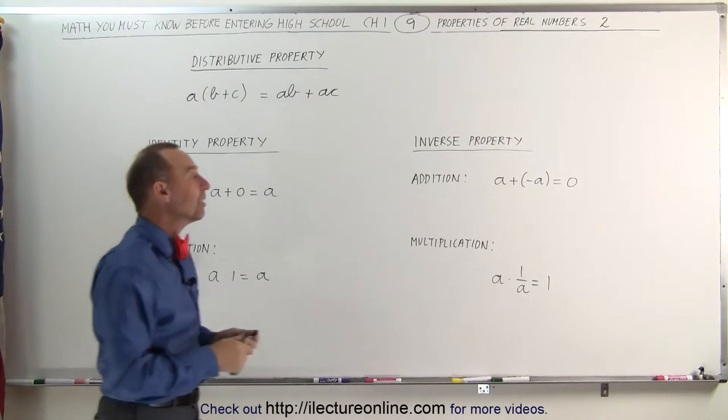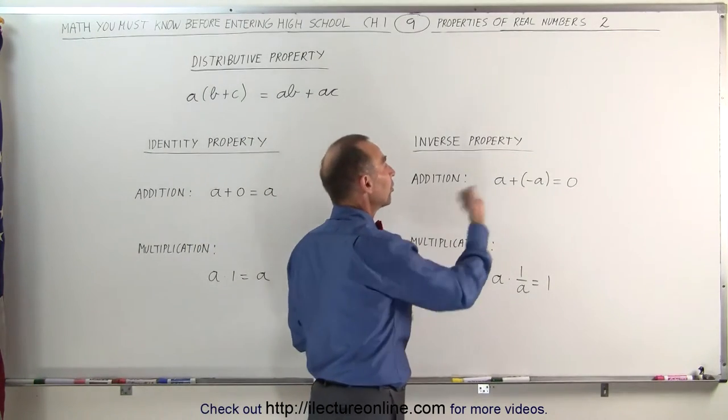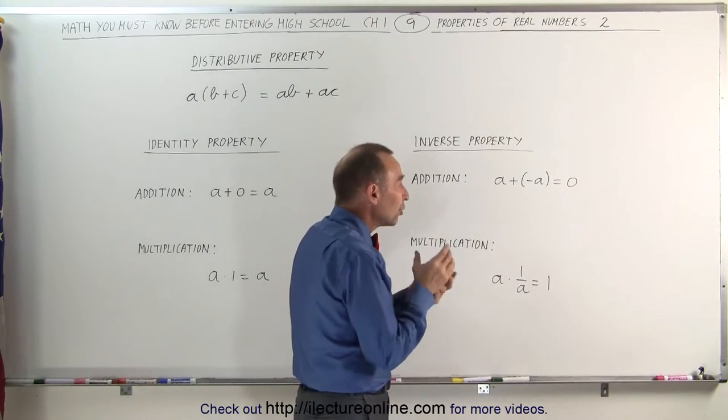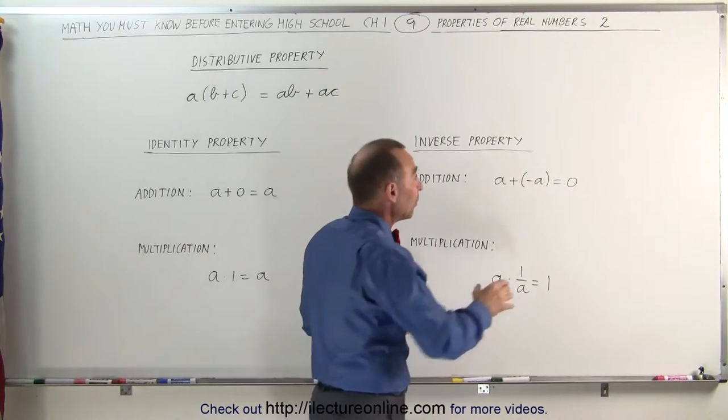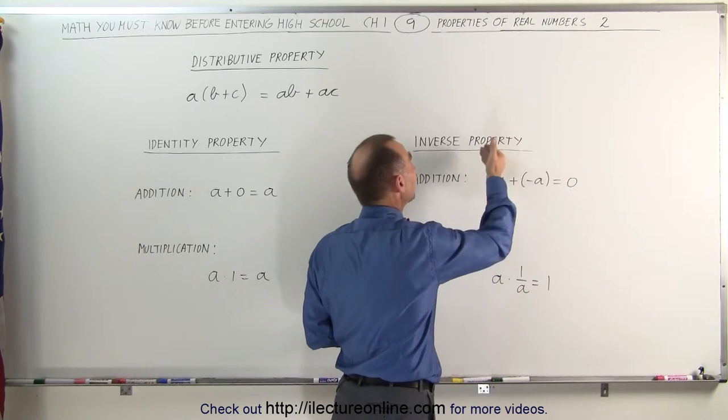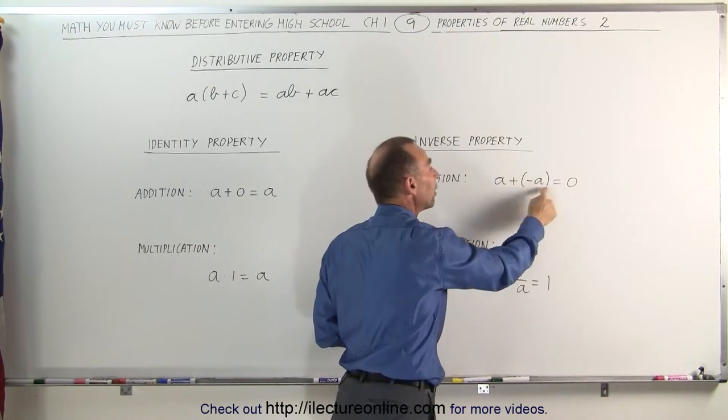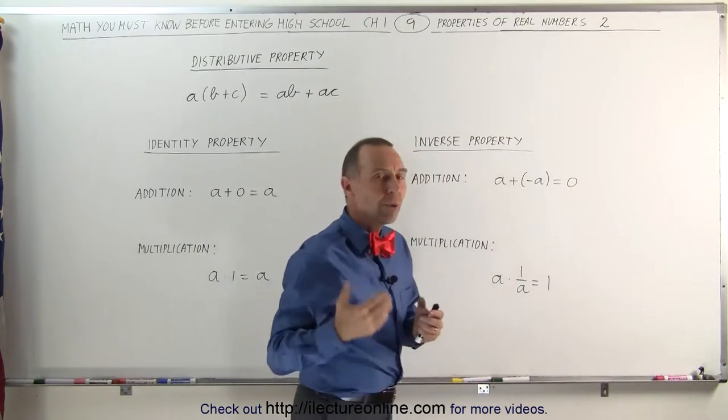The inverse property means that if we add a number to another number and we get zero, we add the inverse to the original number or the opposite, then we get zero. This is called the inverse property for addition. If we take a and add negative a to that, we get zero.